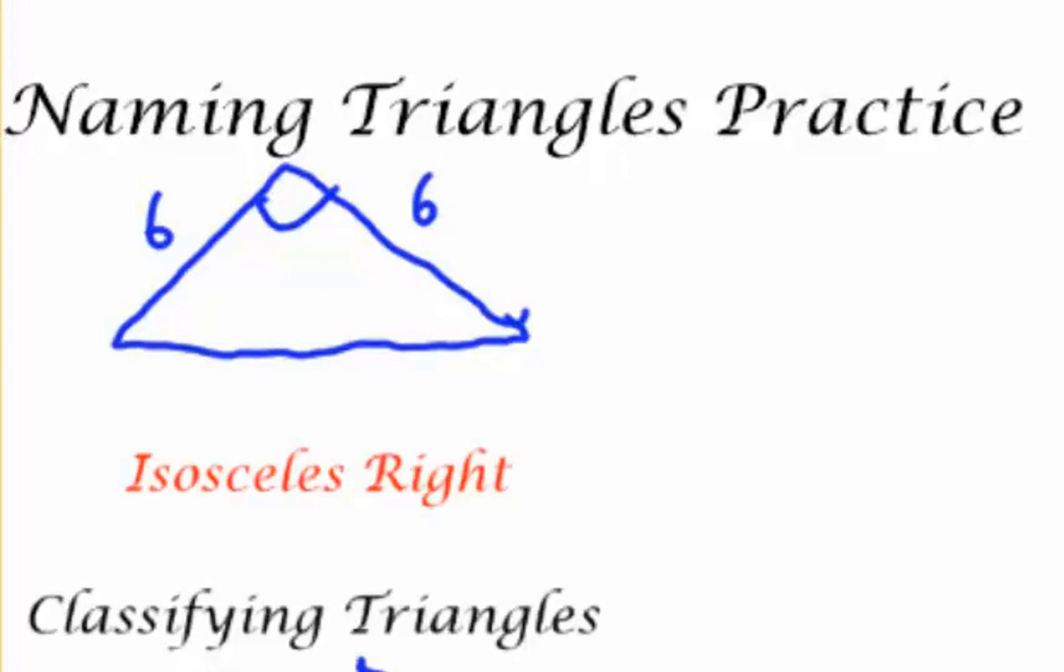Let's draw another triangle, one big obtuse angle. Let's give the sides some length, six, nine, and four. They're all different, so it's going to be scalene. And with one big obtuse angle, it'll be a scalene obtuse triangle.